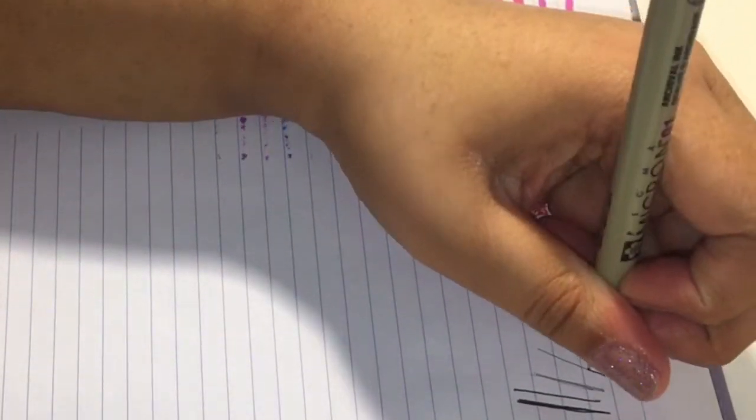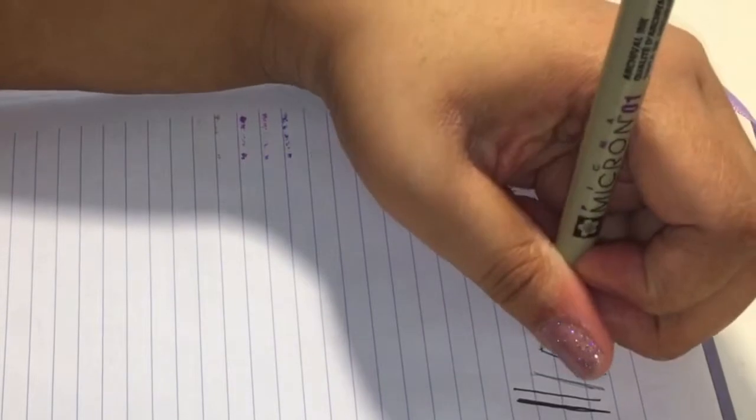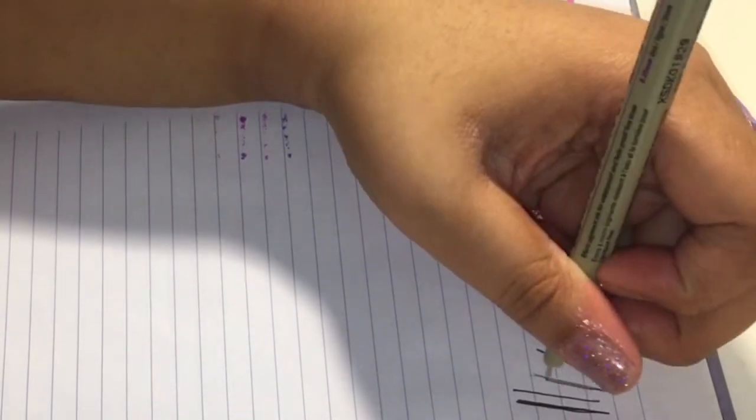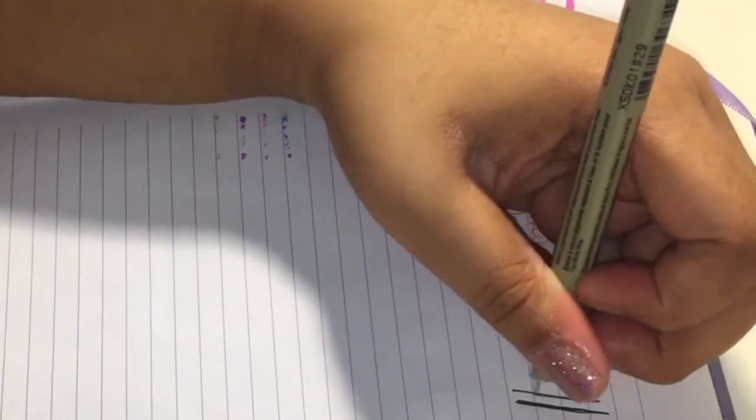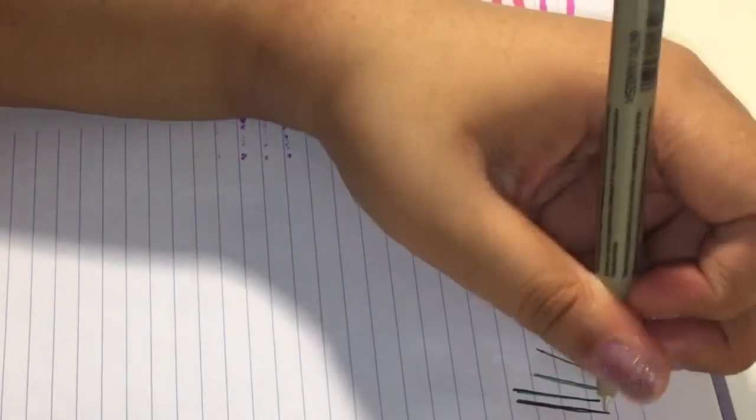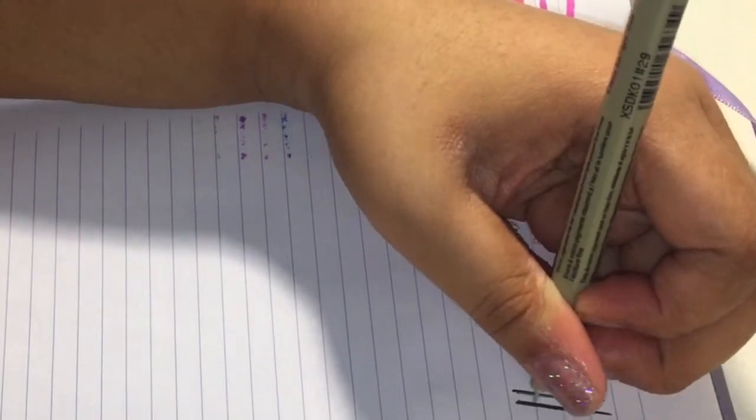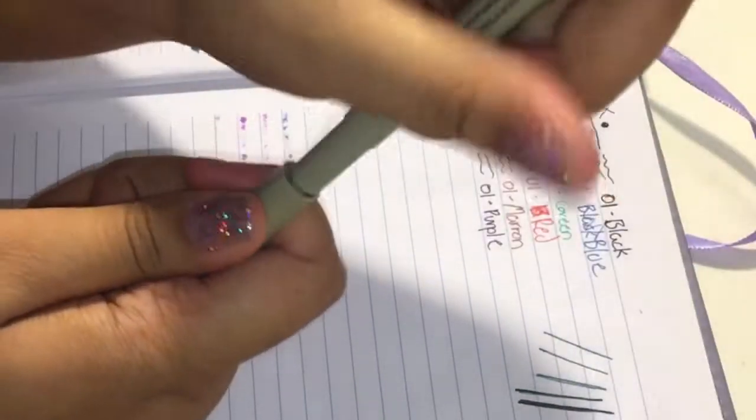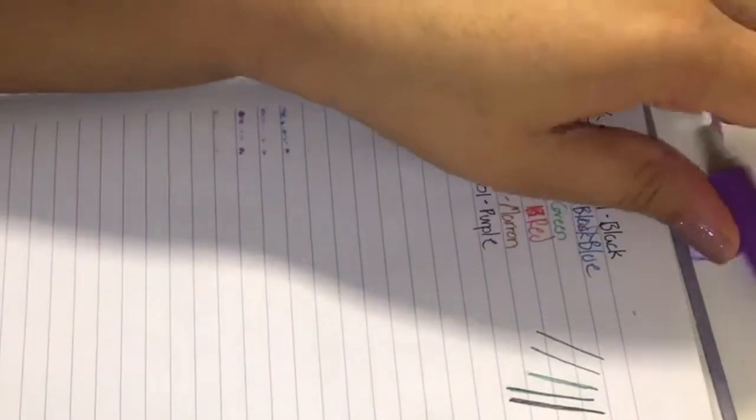I'm tracing it and putting the color over it. I'm just seeing if, because sometimes I write really dark, so I'm just seeing if that would mess up the marker.